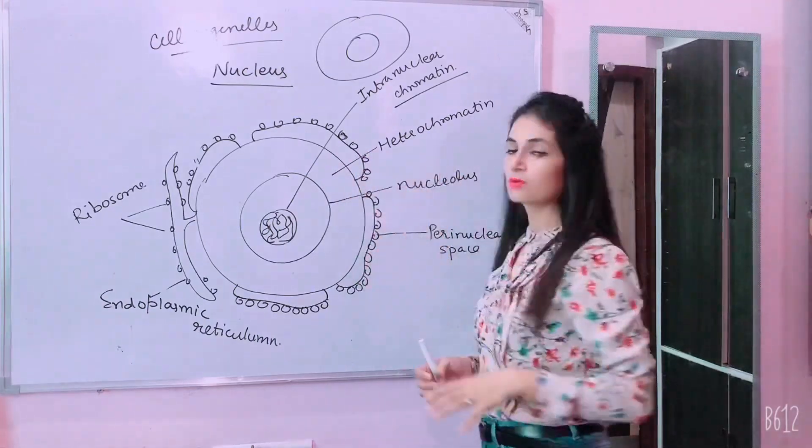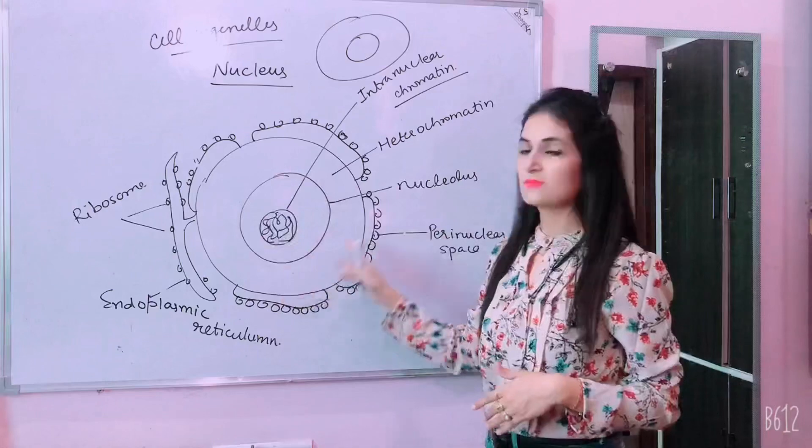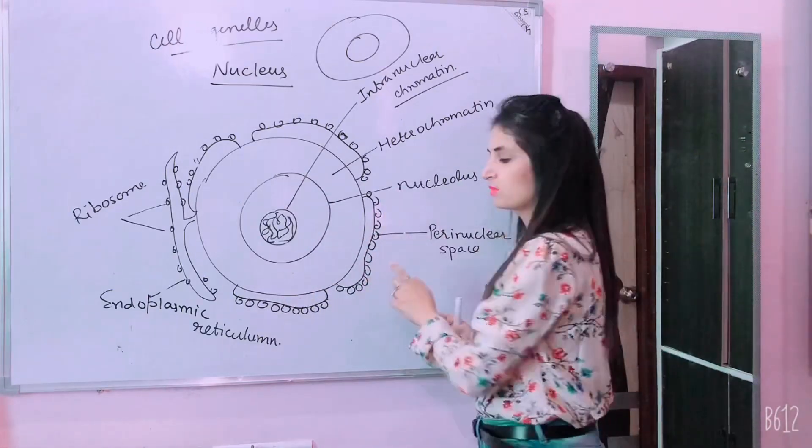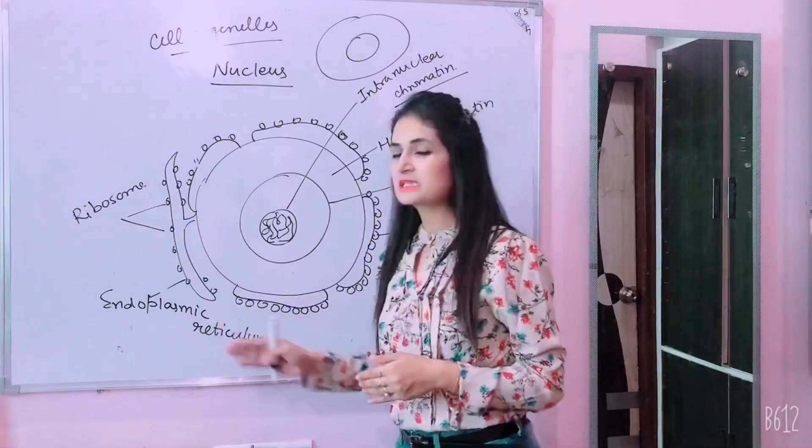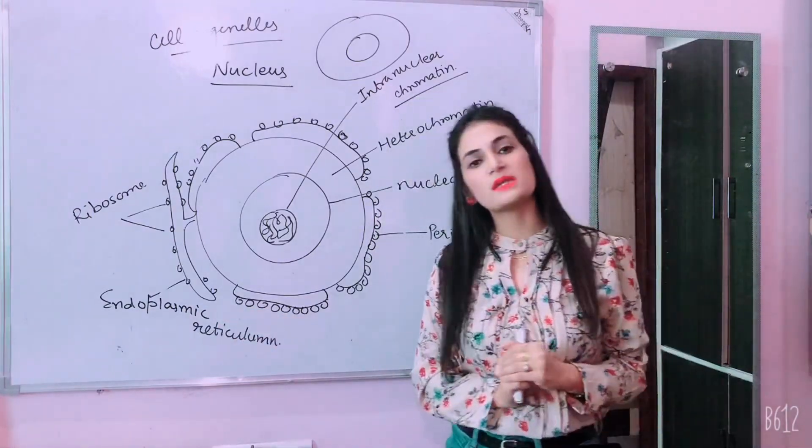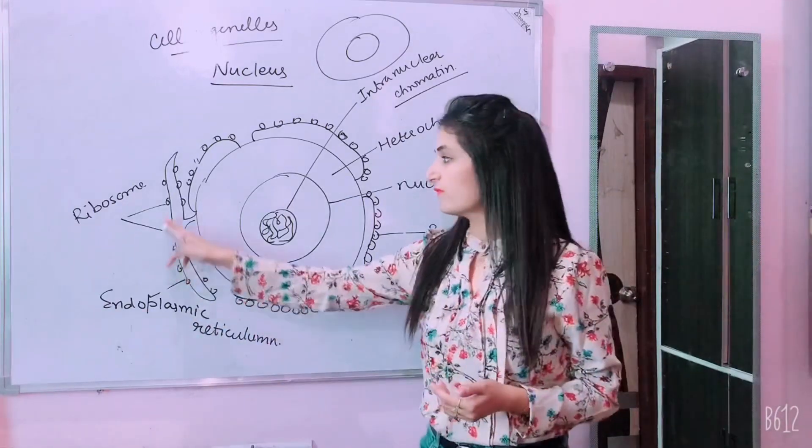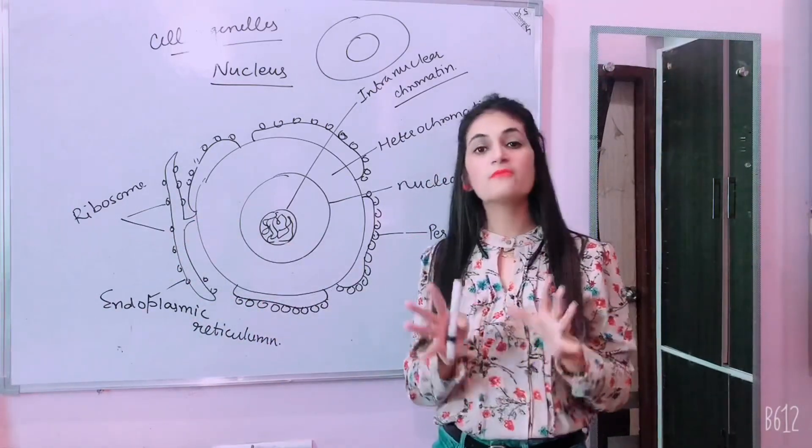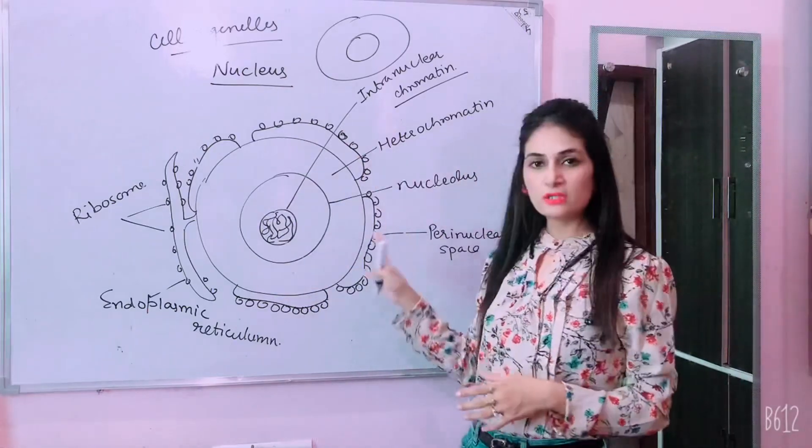Then heterochromatin. Then heterochromatin. This is a different type of chromatin. It will be outer space. Then perinuclear space. It will help in exchanges. Endoplasmic reticulum. What will it be? It will be protein synthesis. It will create proteins with the help of ribosomes. After that, we have to do it. This is the nucleus.